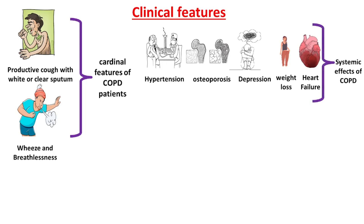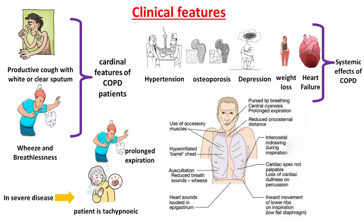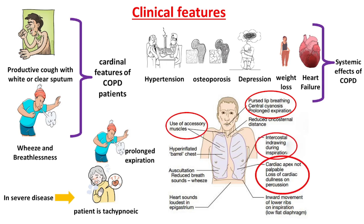In mild COPD, there may be no signs or there may be quiet wheeze throughout the chest, but in severe disease, the patient is tachypnoeic with prolonged expiration, accessory muscles of respiration are used, and there may be intercostal indrawing on inspiration and pursing of the lips on expiration. Cricosternal distance is reduced, chest expansion is poor, and the lungs are hyperinflated, with loss of the normal cardiac and liver dullness.